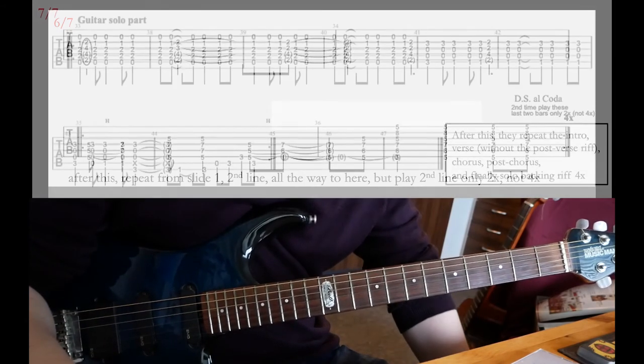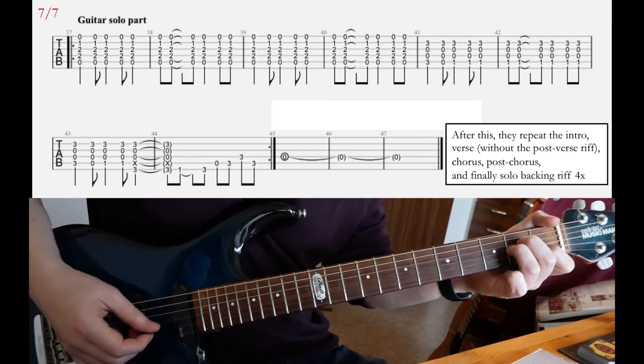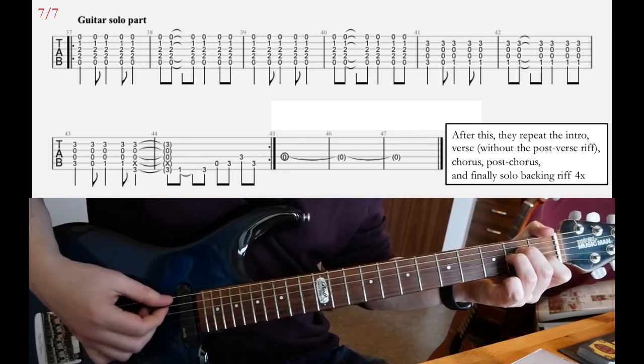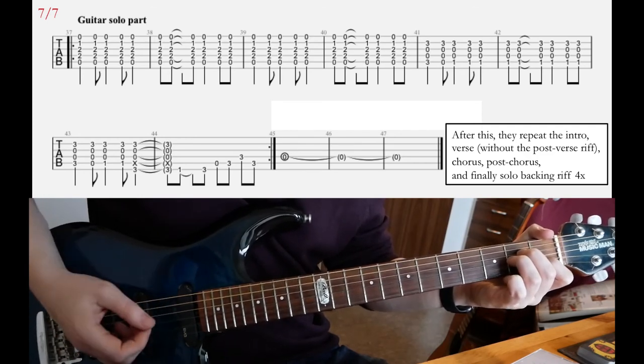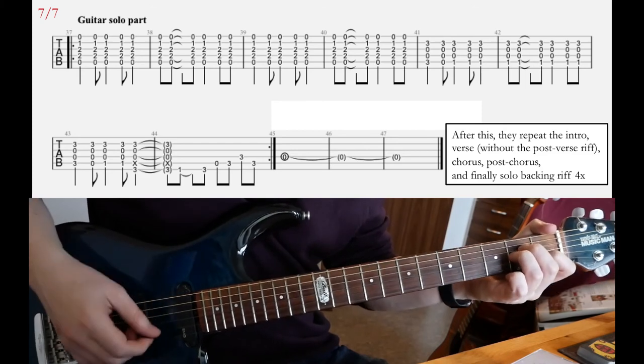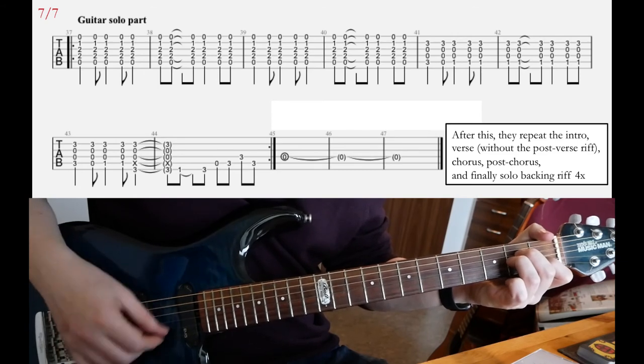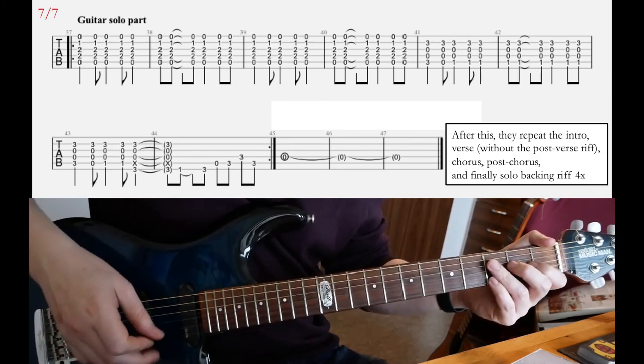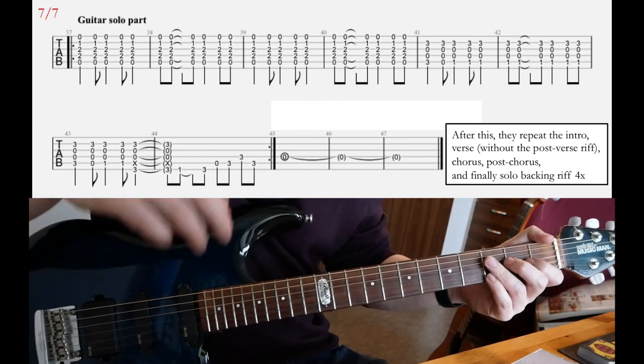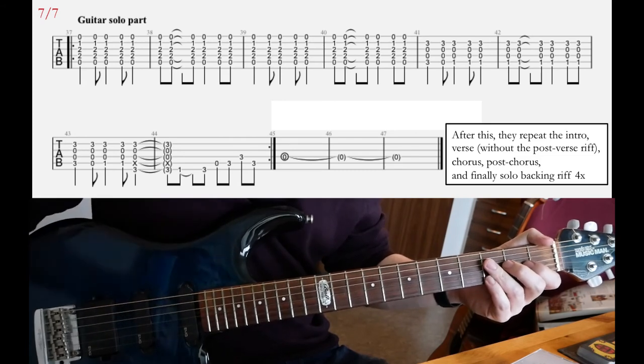And finally, slide 7, we have guitar solo part. That's quite straightforward. So the first 4 bars, you have A minor chord. Like this. A bit slower. Like this.